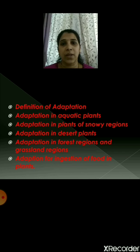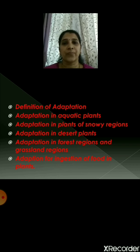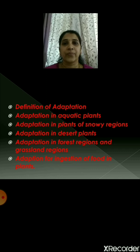Many aquatic plants are thin and slender like a ribbon, and because of this they can withstand the fast currents of water. Air spaces in the stems and the petioles of many aquatic plants help them to float in water. The surface of the stem and leaves of many aquatic plants are covered with a waxy layer.